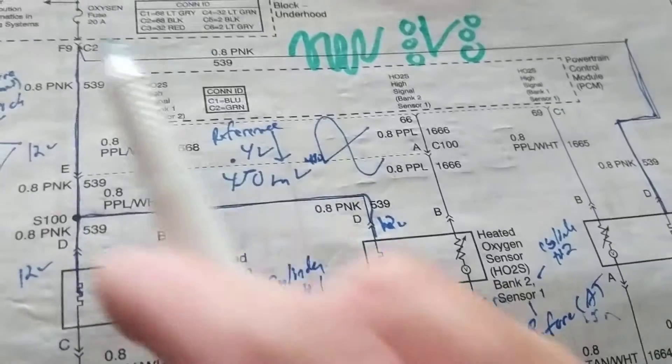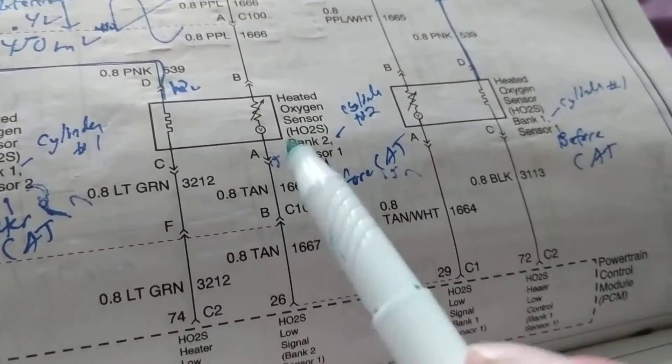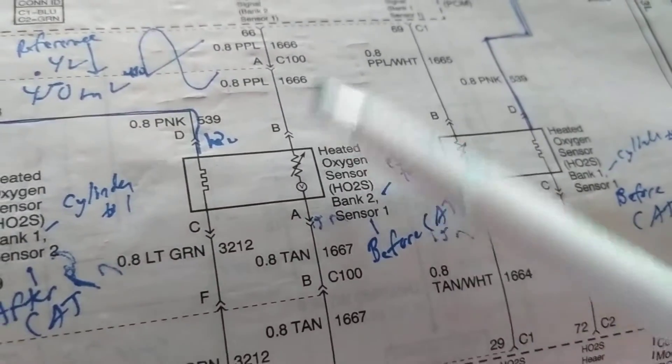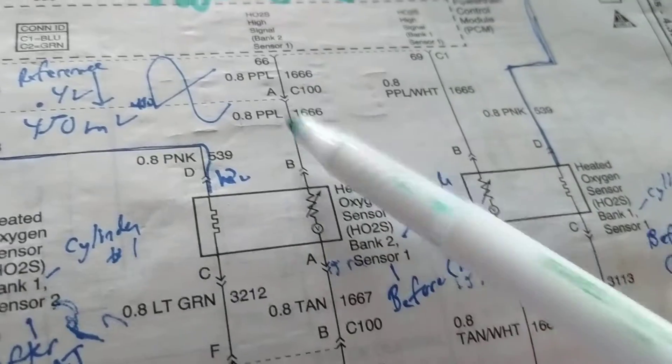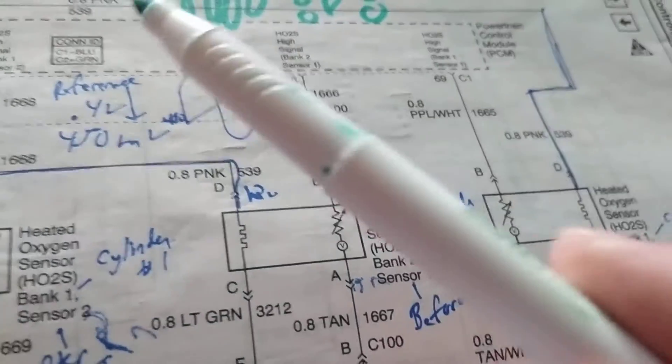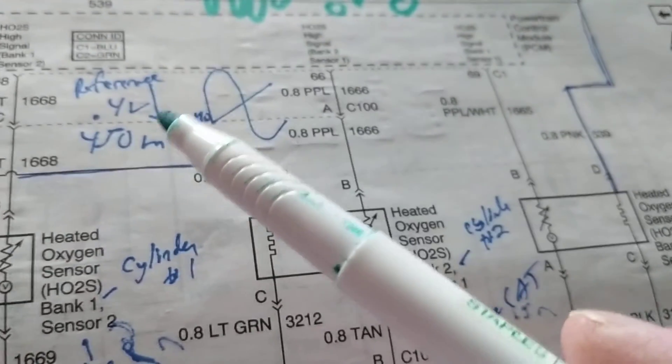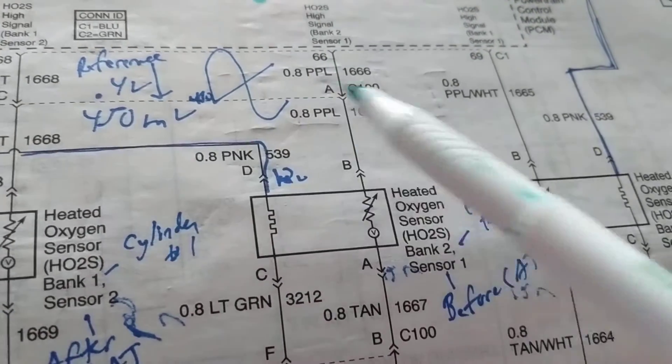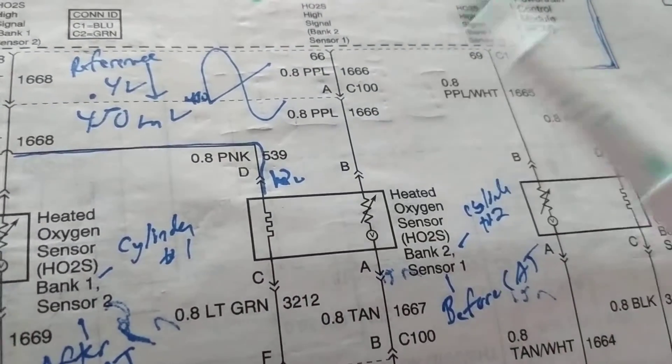Make sure you get 12 volts at the connector. Make sure you have a ground. Then you can determine if it's the connector, the oxygen sensor, and the feedback going back. Obviously you have to use a scanner, but there are ways of going around it to use a multimeter to see if it fluctuates if you have the correct multimeter. That's the whole idea.